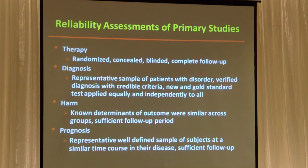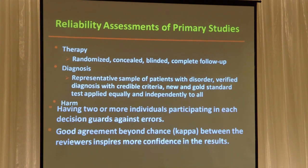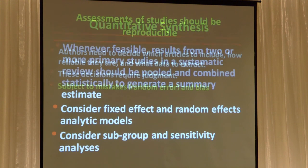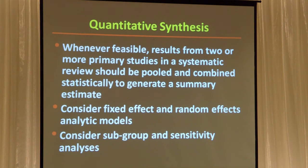Meta-analyses apply to therapeutic questions, like we've been discussing, or for diagnosis or prognosis — any type of question. Two people should do all of these steps because, like any clinical trial, meta-analyses are subject to random error and bias, and we want to minimize those at every step. Then, if you can, we want to quantitatively evaluate the evidence — and now we'll talk about what that quantitation means.